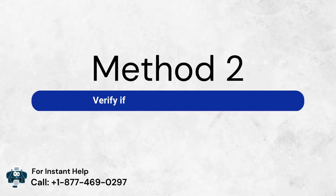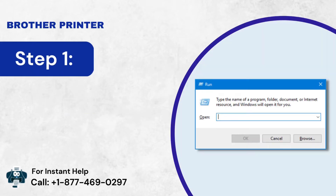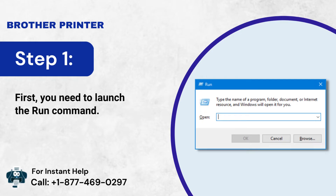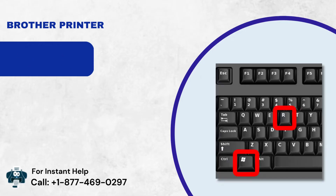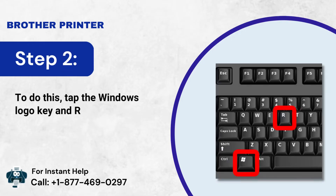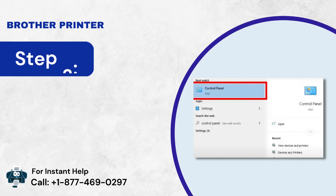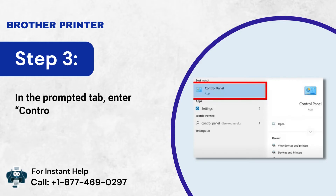Method 2: Verify if the printer is set as default. Step 1: First, you need to launch the Run command. Step 2: To do this, tap the Windows Logo key and R at the same time. Step 3: In the prompted tab, enter "control" and then press OK.